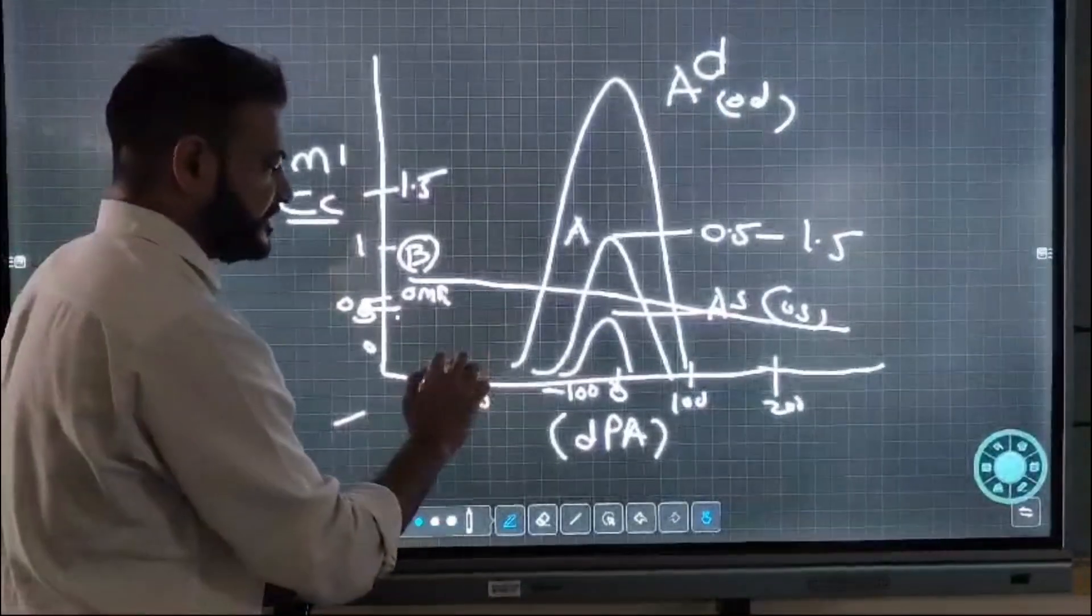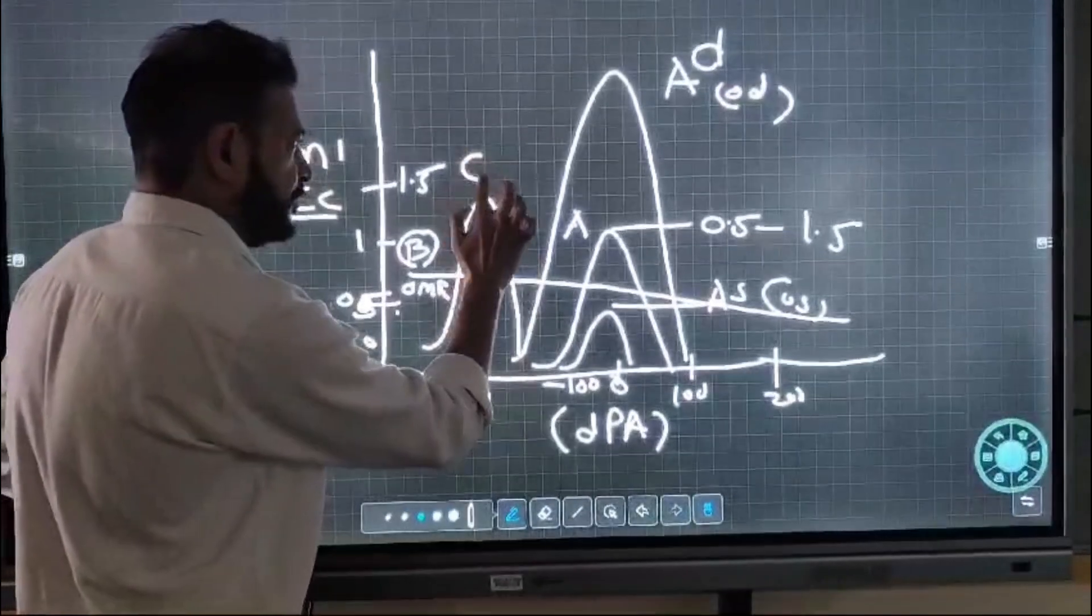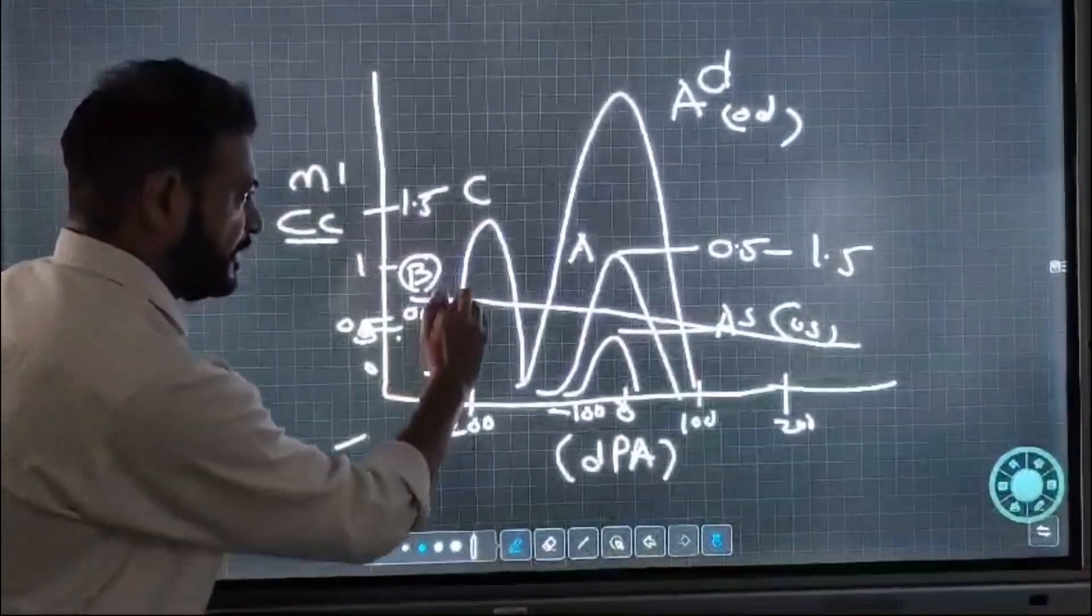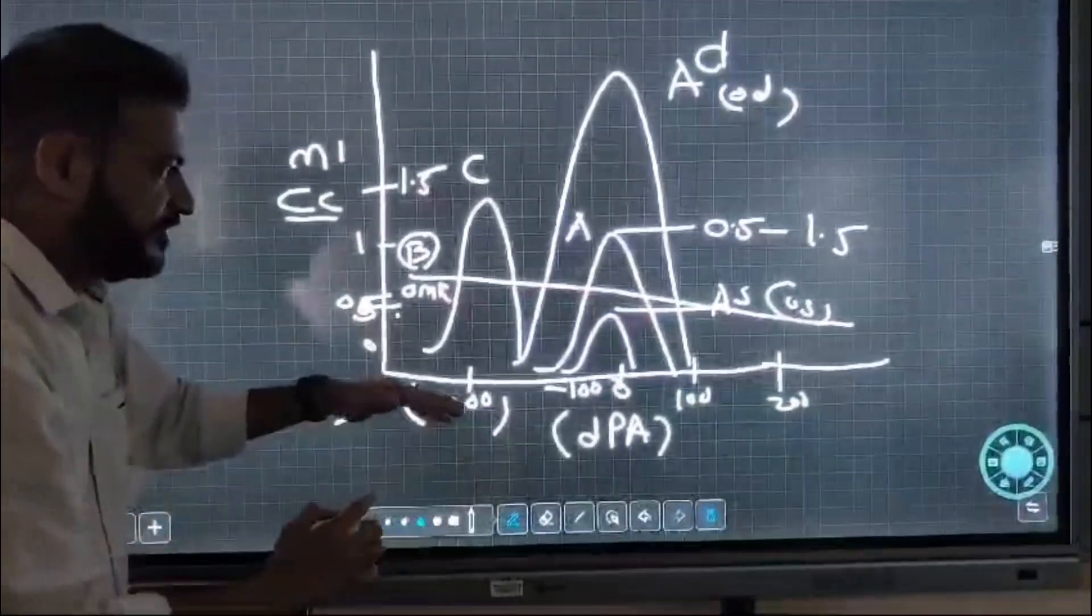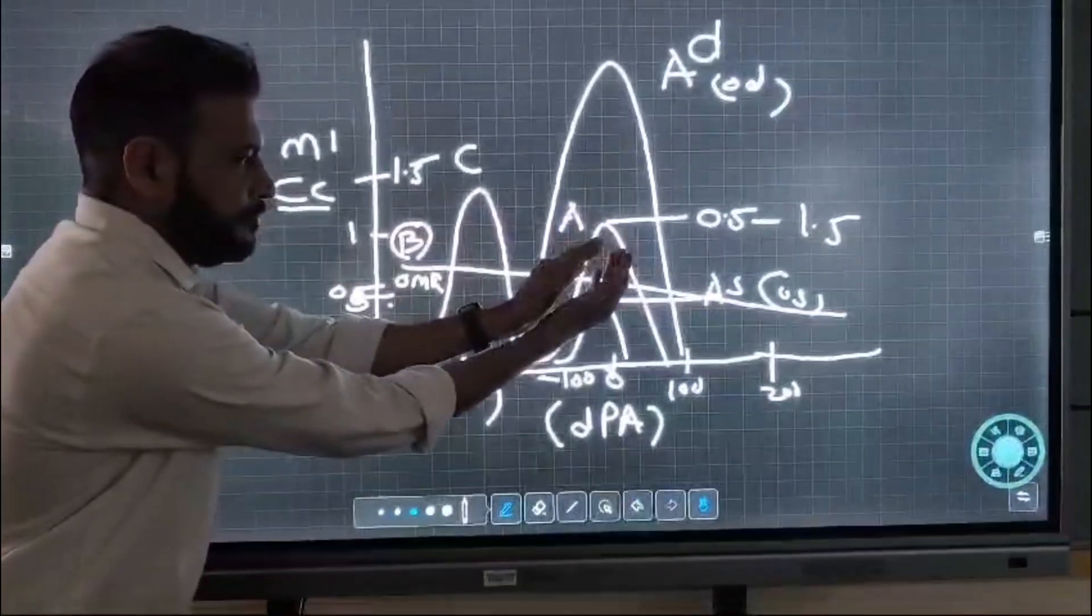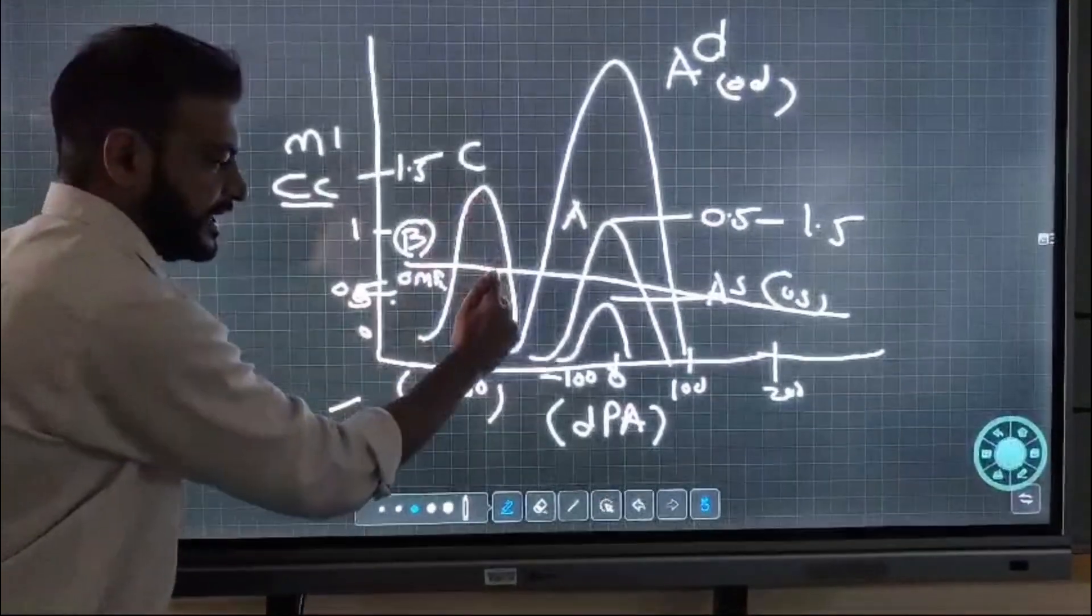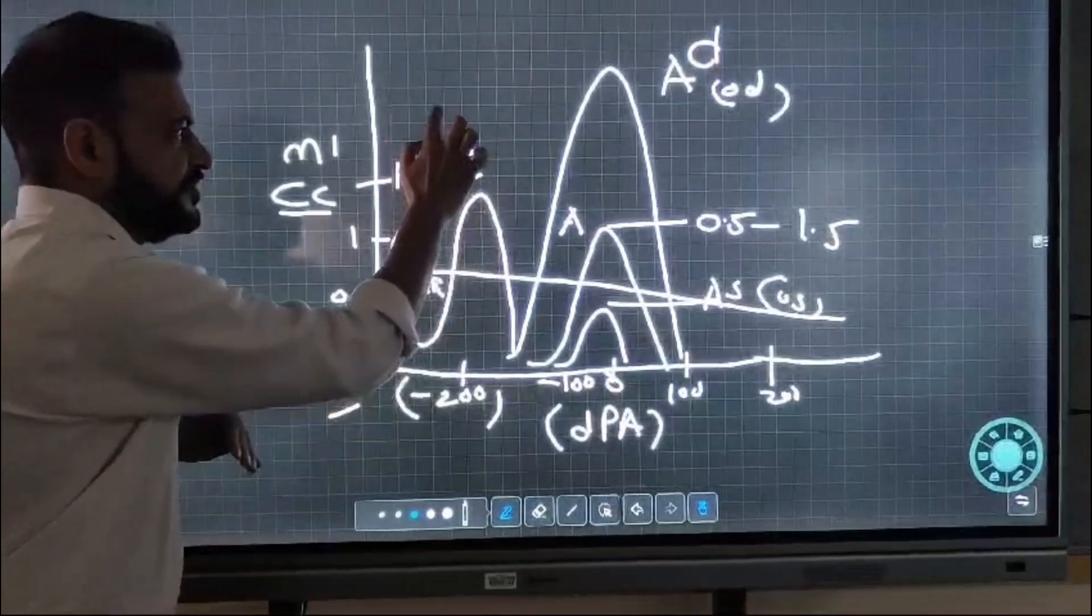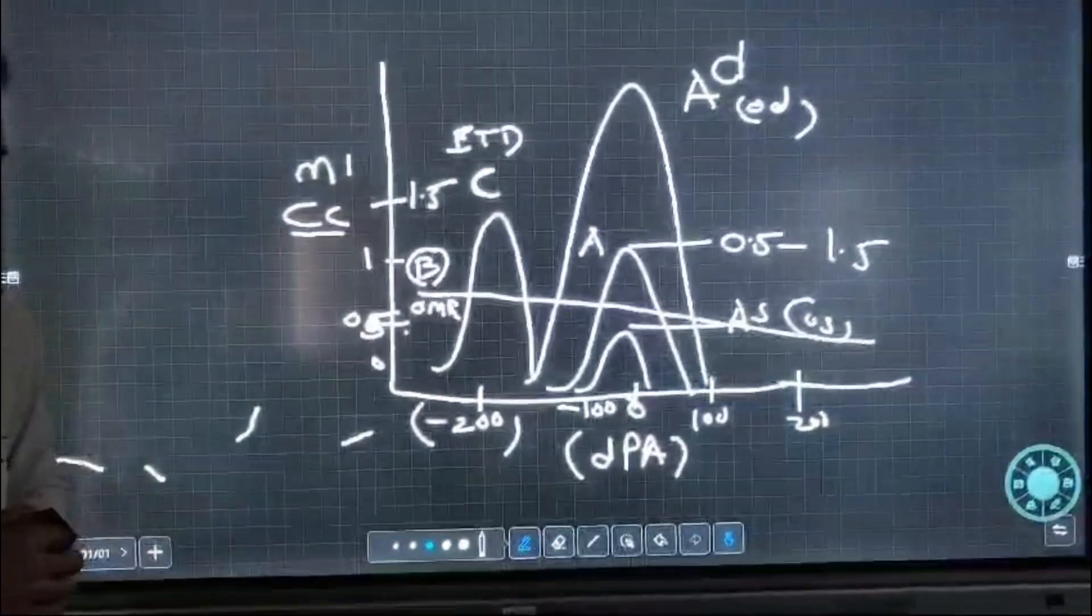The third type is a Type C curve. It shows normal compliance but at a negative pressure. It is the same as Type A but shifted to the negative pressure side. Normal compliance at negative pressure is called a Type C curve, seen in Eustachian tube disease and other conditions.